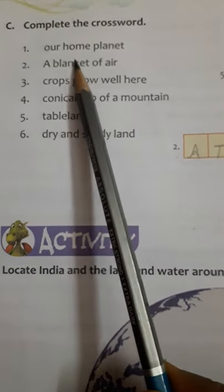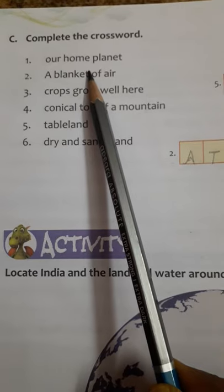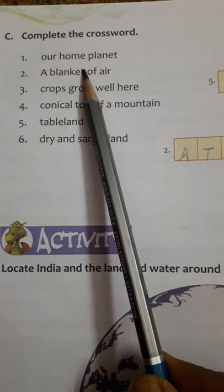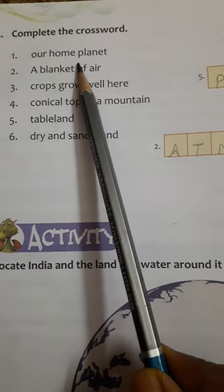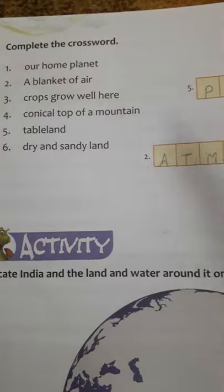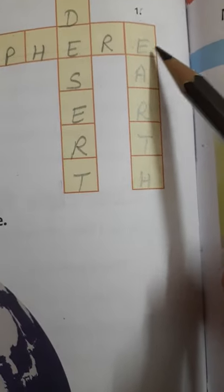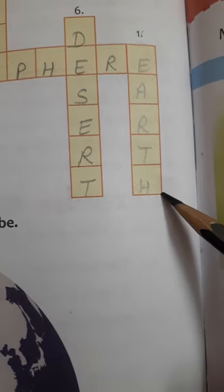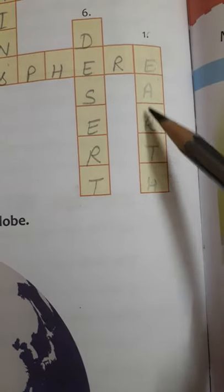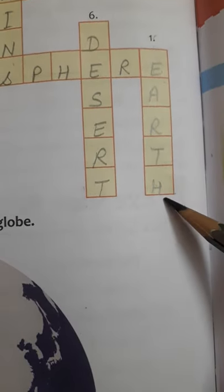Our home planet. Which one is our home planet? Which planet do you live on? Earth. Yes, the answer is Earth. So you will write number 1, Earth. Number 1 is there, so you will write the spelling of Earth: E-A-R-T-H. Single letter in a single box.